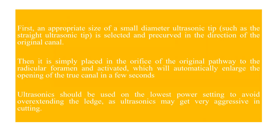Another method is using ultrasonic tips. Smaller-diameter ultrasonic tips improve visibility and reduce the need to sacrifice sound dentine while bypassing the ledge, though their drawback is greater susceptibility to fracture. Select an appropriate smaller ultrasonic tip, pre-curve it in the direction of the original canal, place it in the orifice, and activate it — it will enlarge the opening coronal to the ledge so you can then use smaller K-files to bypass it. Always use ultrasonics on the lowest power setting to avoid over-extending the ledge or creating another false path.